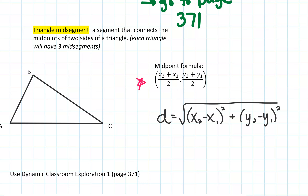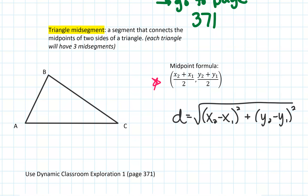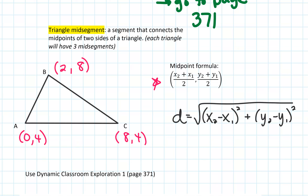Every triangle has three mid-segments as part of it. We're not necessarily going to use all of the mid-segments, but they're all part of the triangle. So I'm going to give you the endpoints for this triangle: A is at (0, 4), C is at (8, 4), and B is at (2, 8). Then we're going to find the midpoint of each of those sides by averaging the x-values and the y-values.